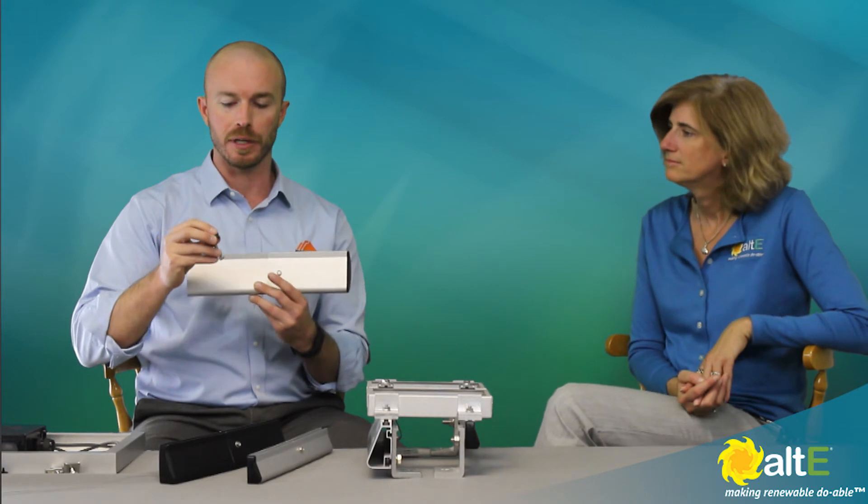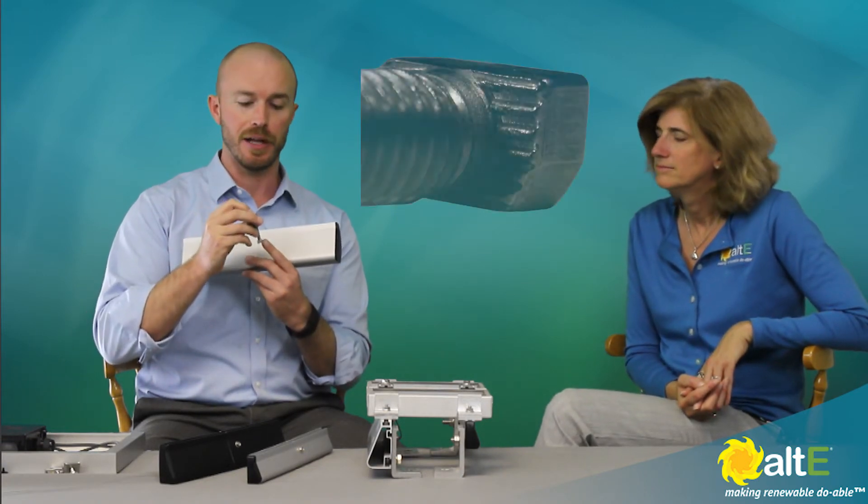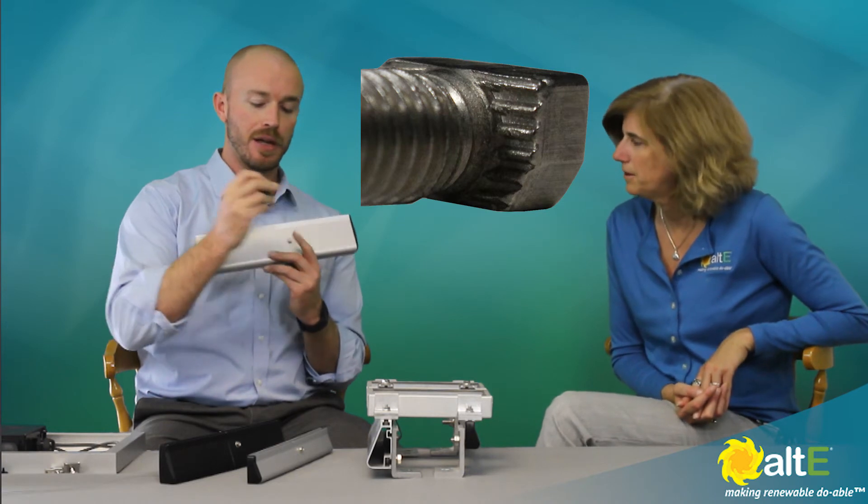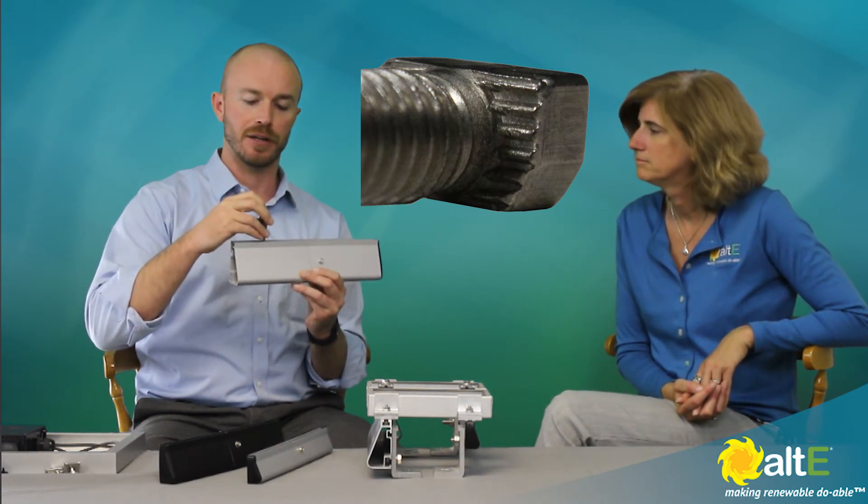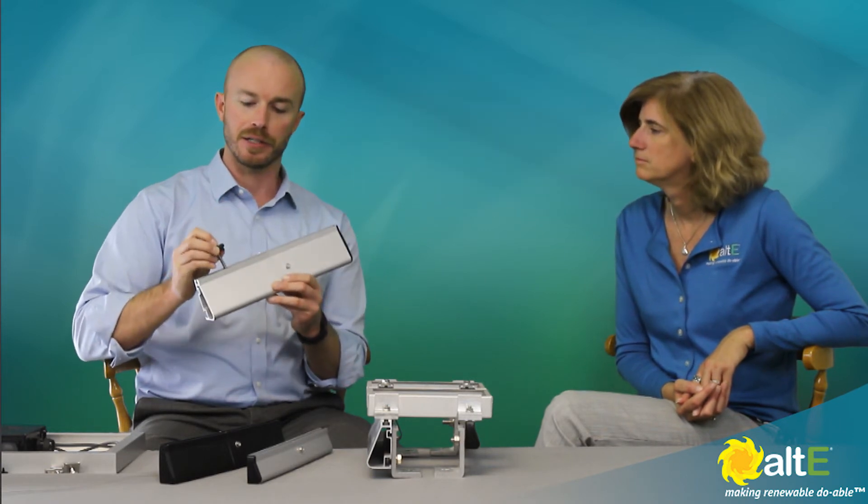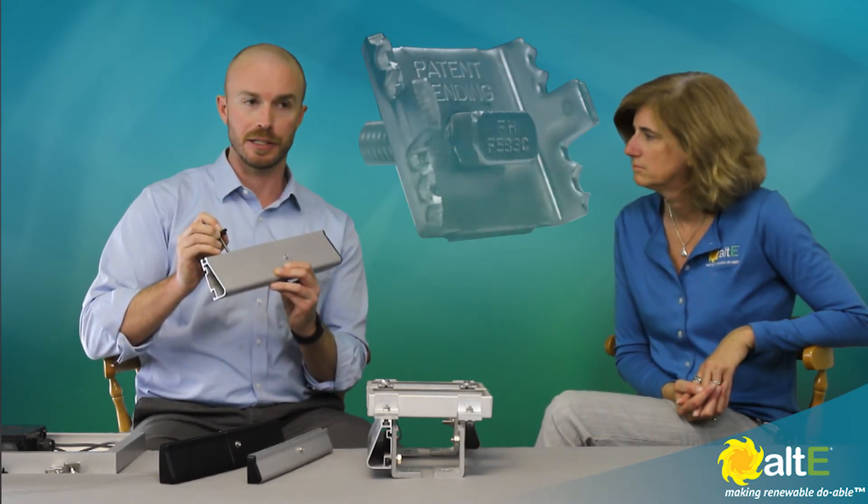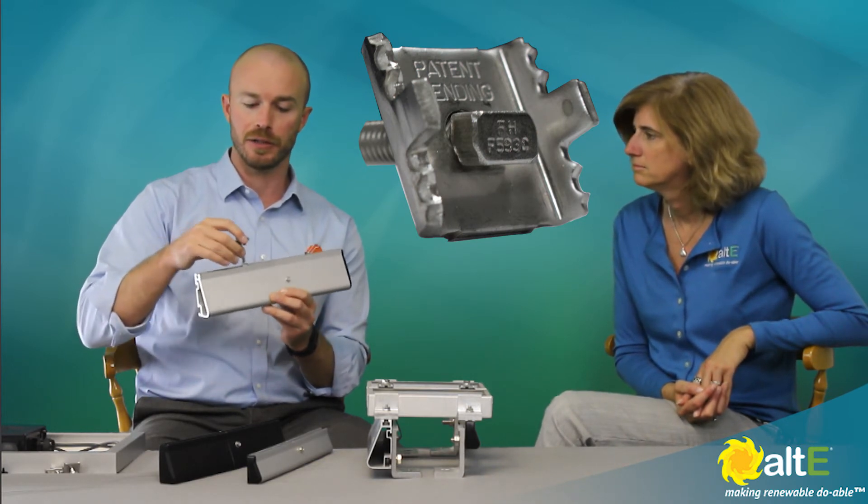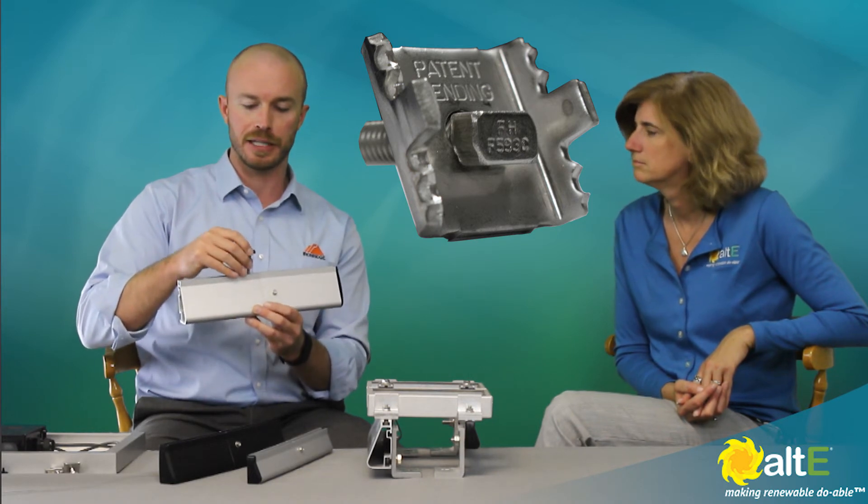So the way that works, and it's going to be very hard to see, but there are small ridges on the bottom of the T-bolt. They go into the rail channel and get through the anodization in the channel. Then there are some larger sized ridges, some kind of teeth looking things on the module mid clamp right there. That's going to, again, bite through the anodization on the top of the module.